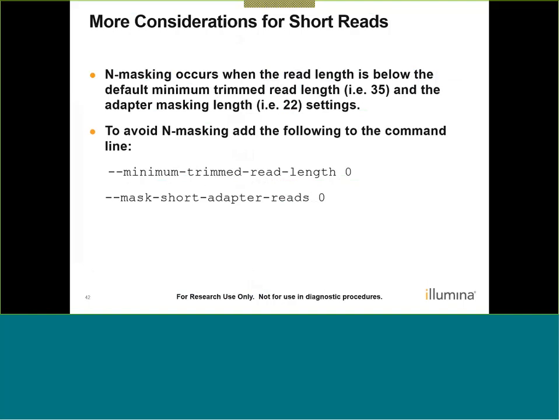Some additional considerations for short reads: if sequencing a library with short reads, such as a small RNA library with 21 bp reads, you may observe N masking in your FASTQ files. This occurs because the read length is below the default minimum trimmed read length of 35 and the adapter masking length of 22. To avoid this, include two commands to set the minimum trimmed read length and mask short adapter reads to lower values — in this case, specifying zero ensures no N masking is performed regardless of sequence length.